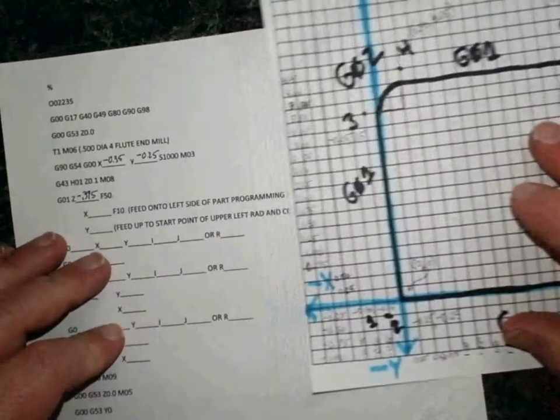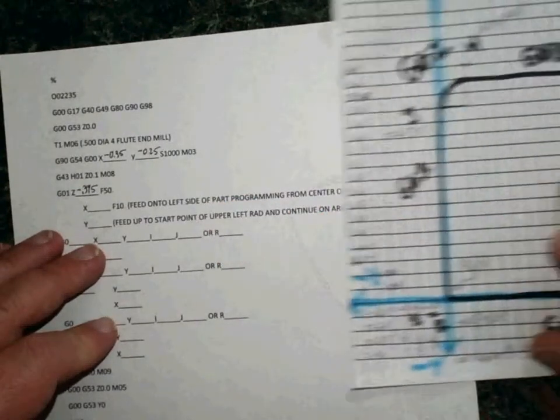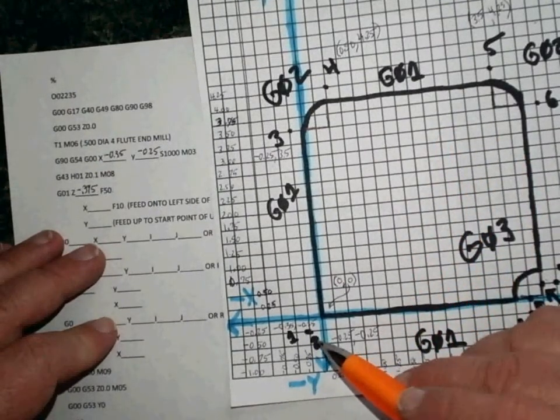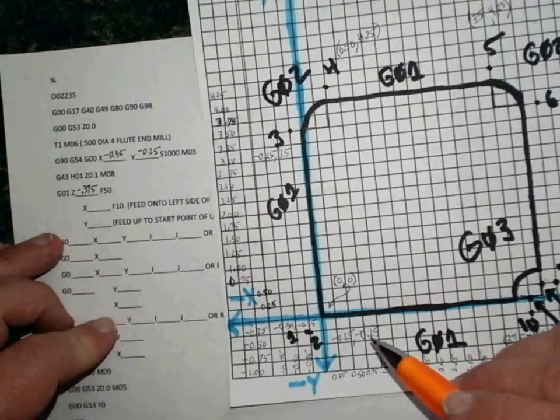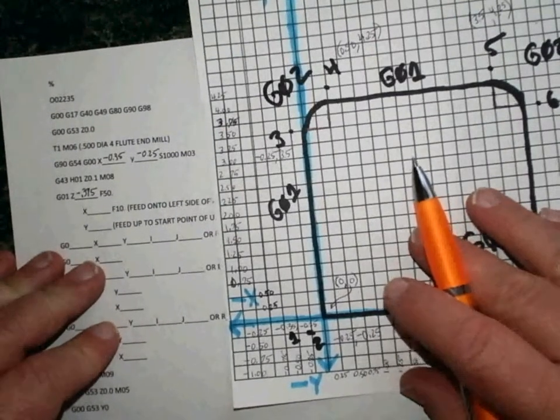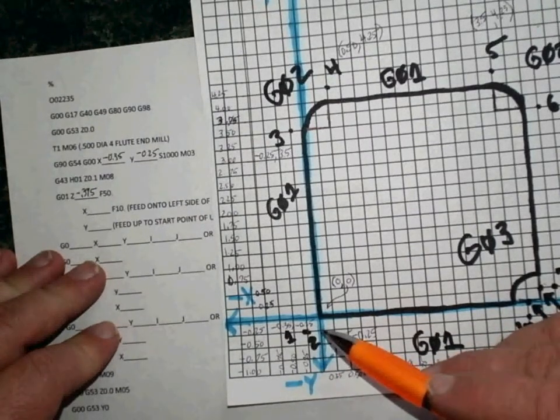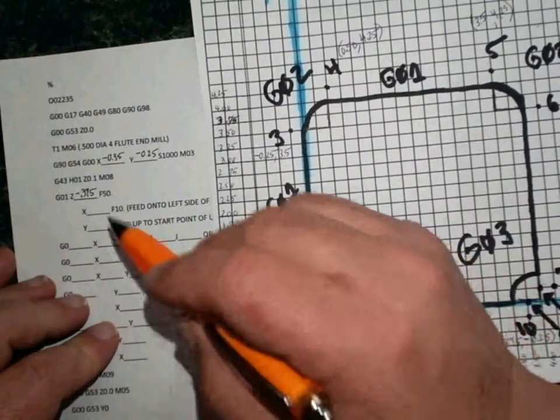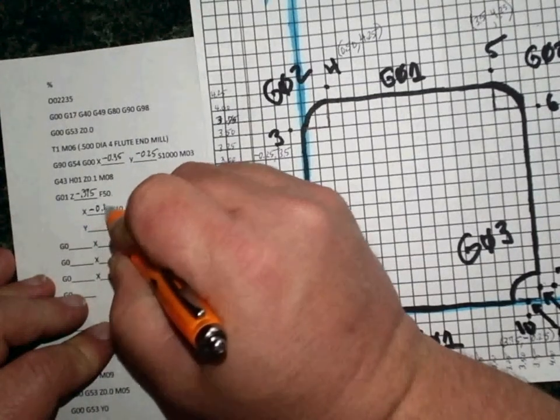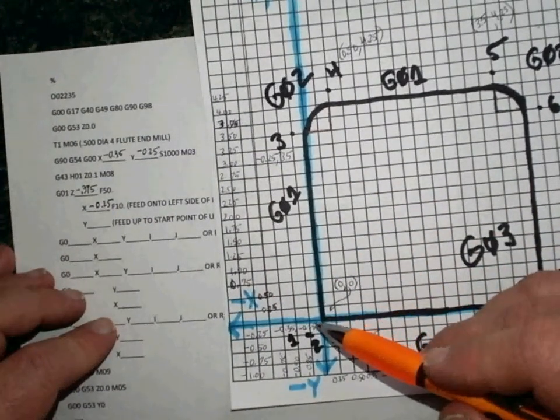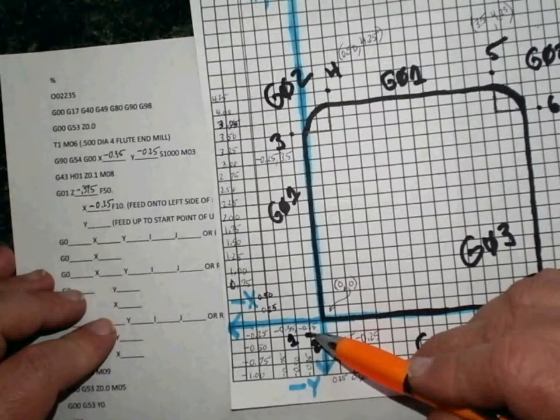Okay, now the next part of this says feed into the left side of the part, programming from the center of the tool. So that corresponds with the location of point number 2, and we decided that was minus 0.25 on the X and minus 0.25 on the Y. We're actually not feeding up or down, we're only moving in the X direction, so we're only going to worry about the X coordinate. So in this spot right here, we're going to give our X coordinate as minus 0.25. That'll accomplish that move from this point to this point, just a very small move of a hundred thousandths from left to right.